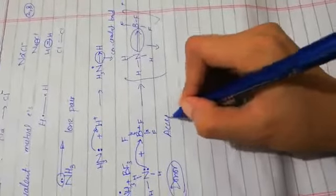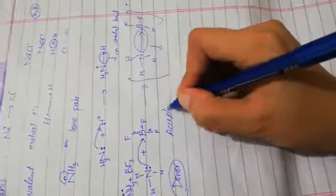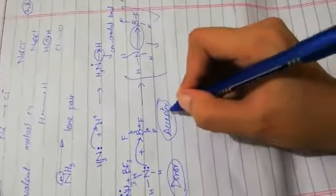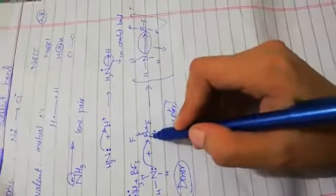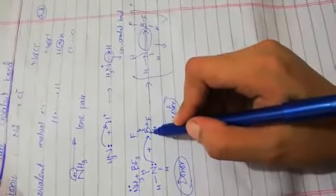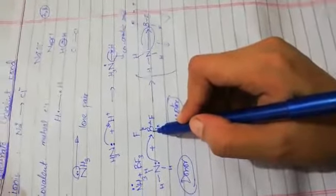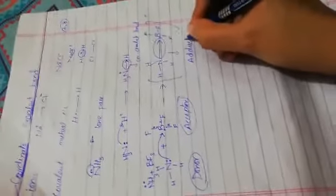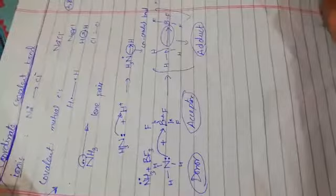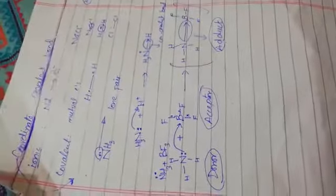One atom is the donor and the other is the acceptor atom, which will accept the electrons. An atom, group of atoms, or molecule can participate, and the product formed is known as an adduct. These are 3 to 4 definitions which are important.